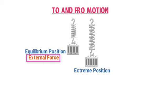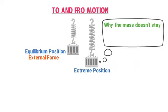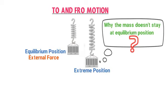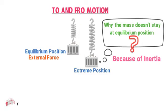When I remove the external force F, the mass will move back and will overshoot its equilibrium or mean position. This is because of inertia — mass M overshoots its equilibrium position. After this, the mass M will return from its extreme position back to its equilibrium position, and one oscillation is completed.